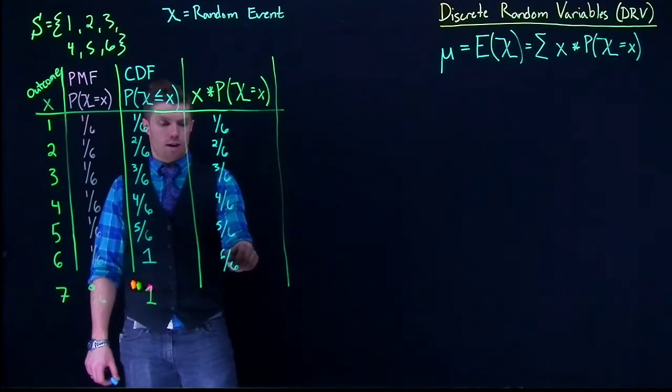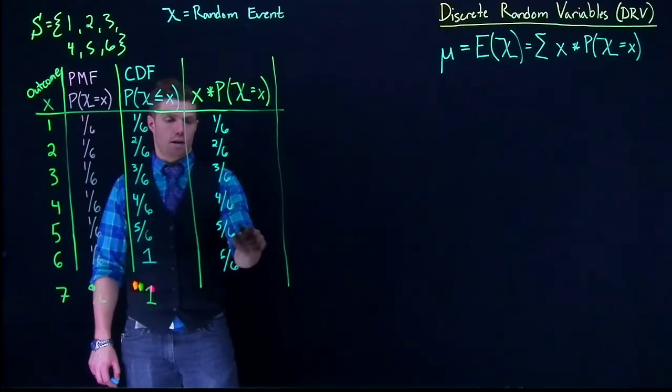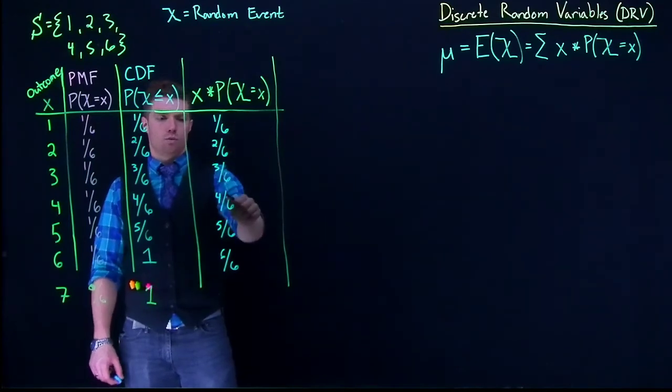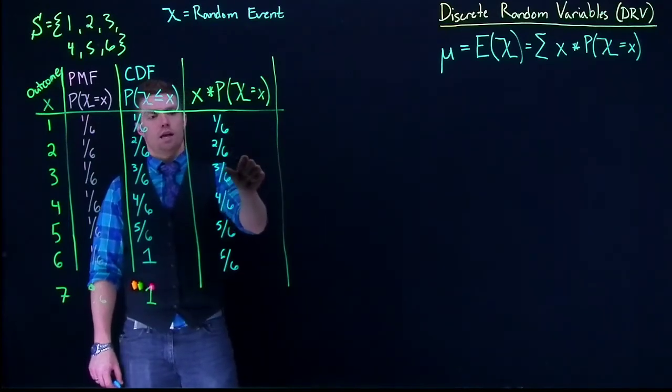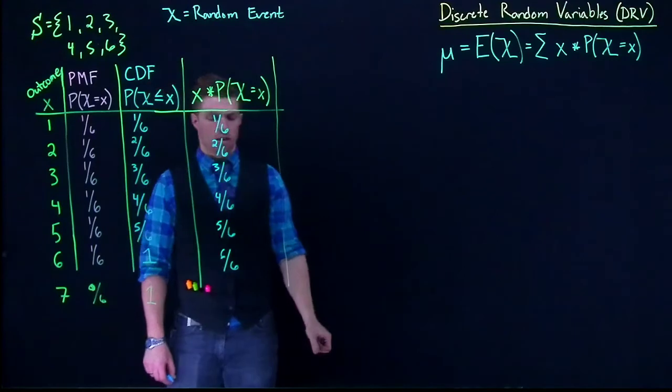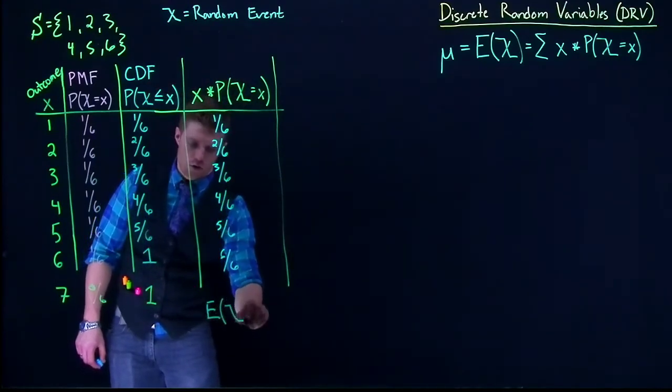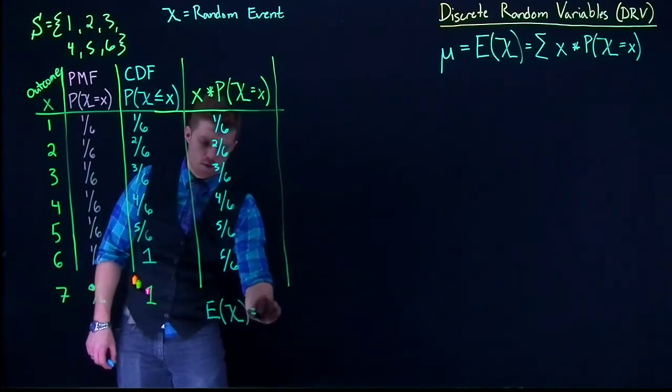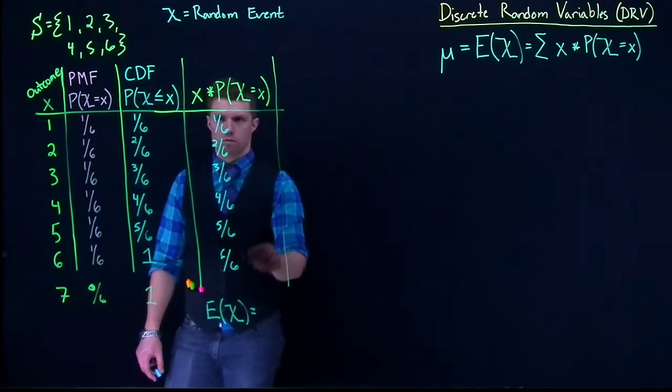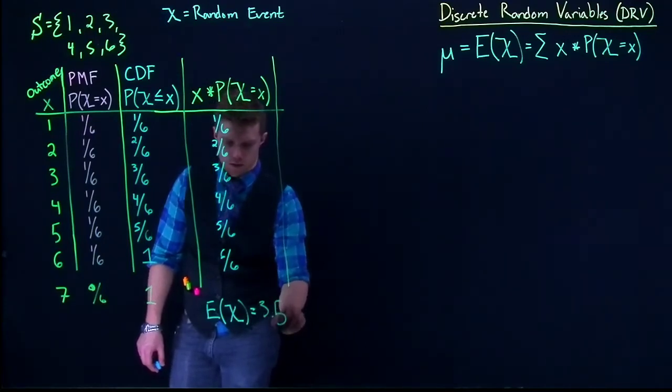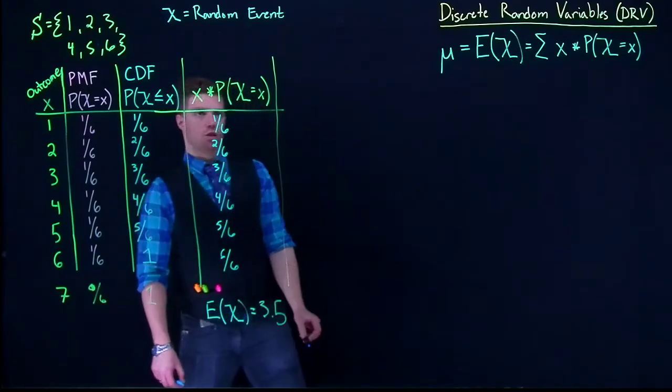Okay, so we can do, so 6/6, that's 1, 5/6 and 1/6, that's another 1, 2/6 and 4/6, that's another 1, and we've got 3/6 right there. So the expected value of our discrete random variable is, in fact, equal to 3.5, or the sum of this column.